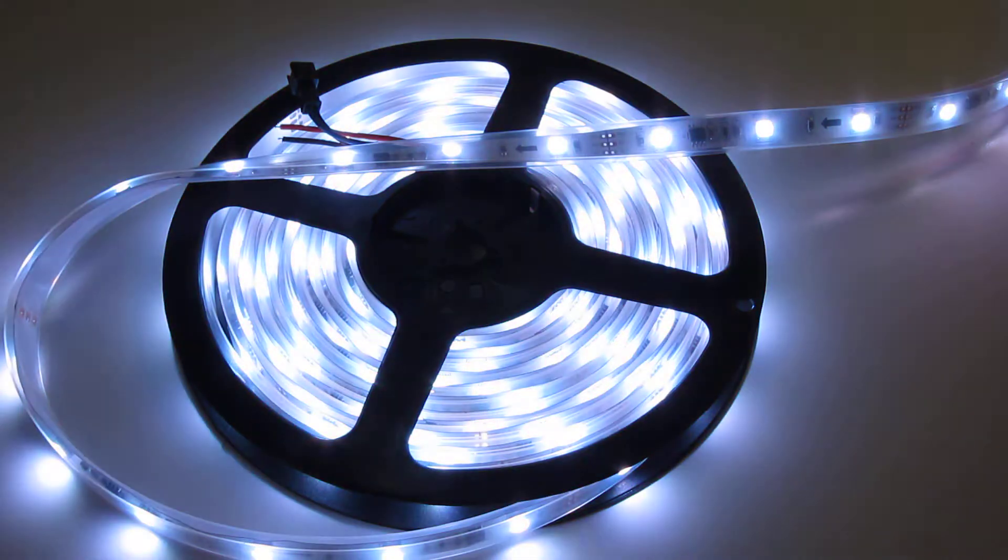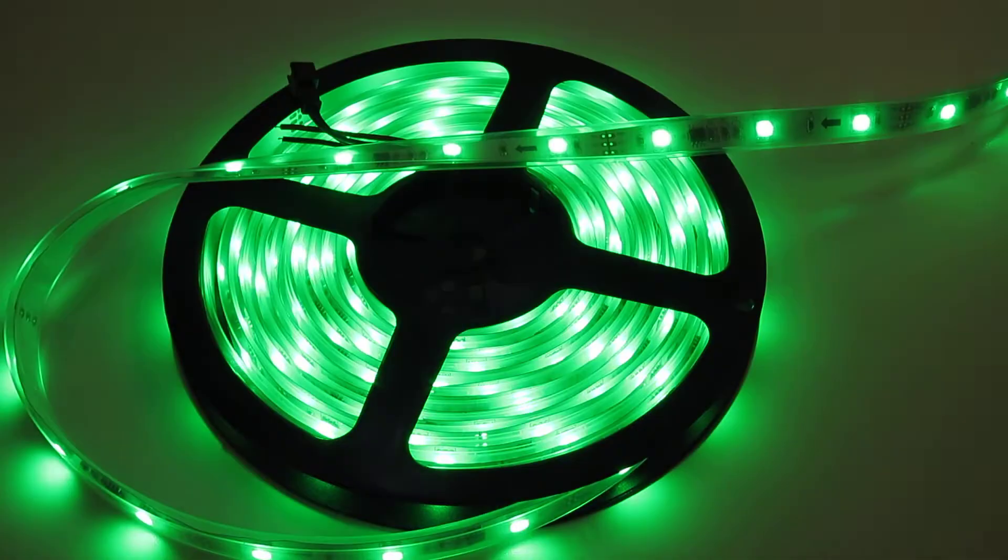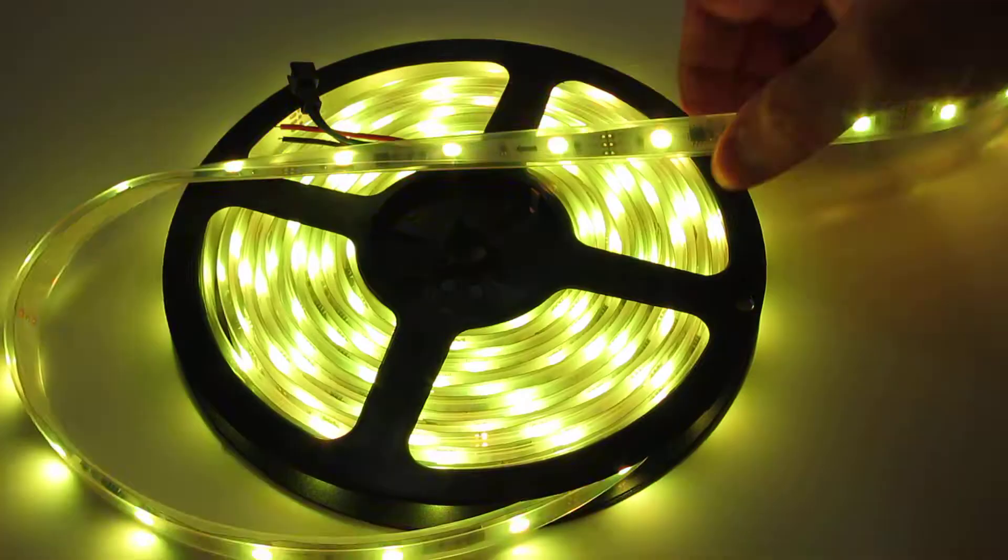This is Holiday Corals item number 659 RGB pixel strip. It is 30 LEDs per meter which is 150 total LEDs.